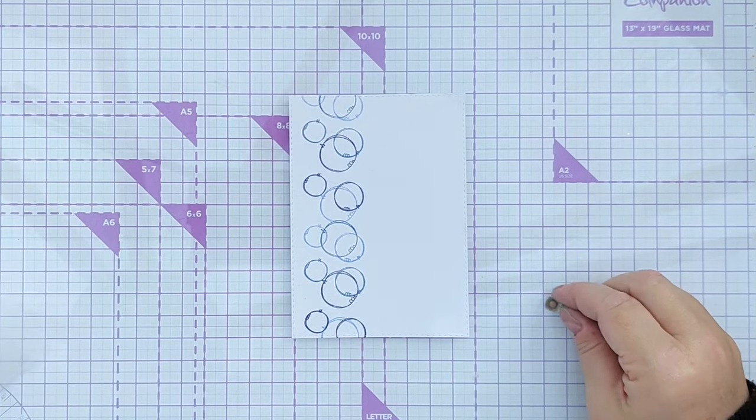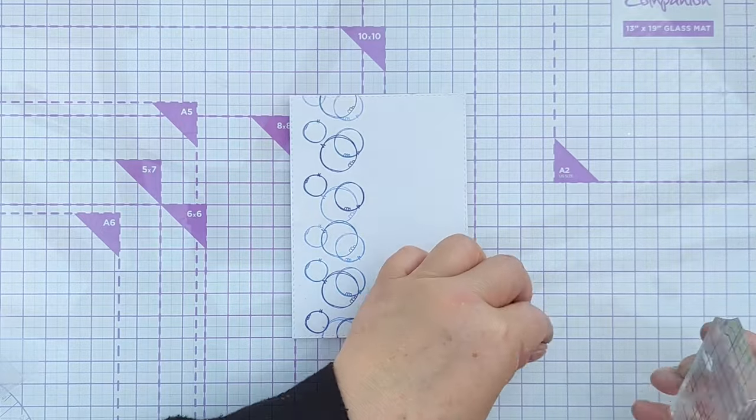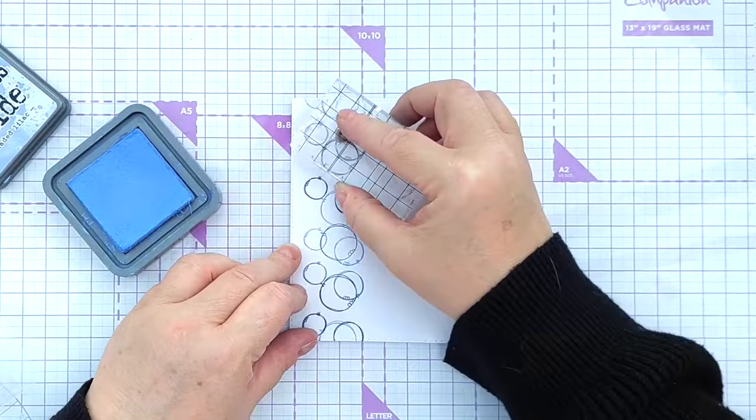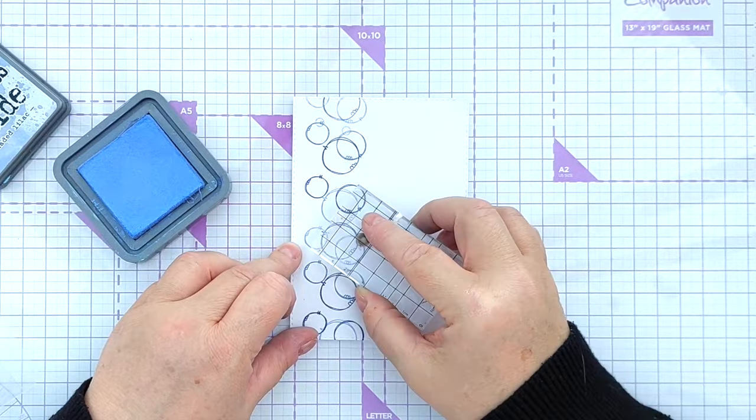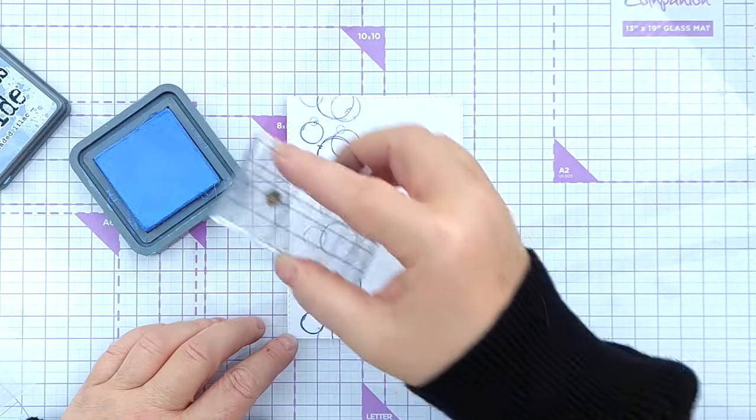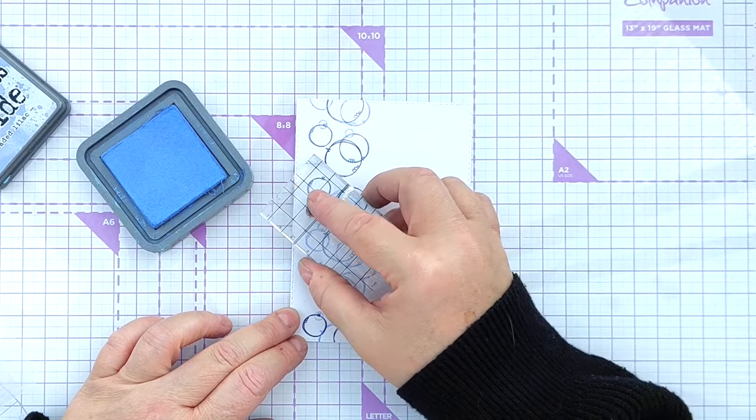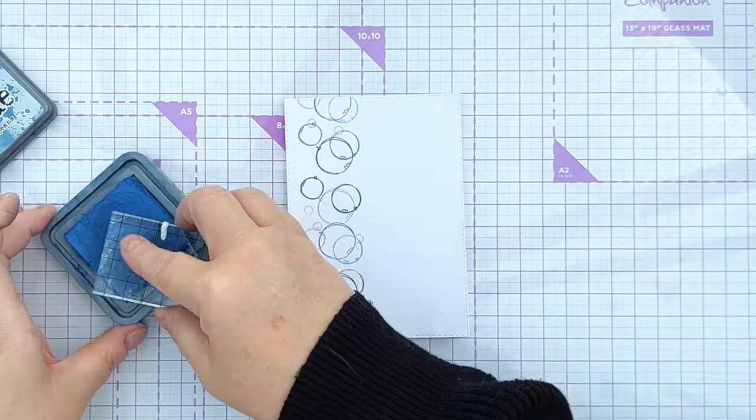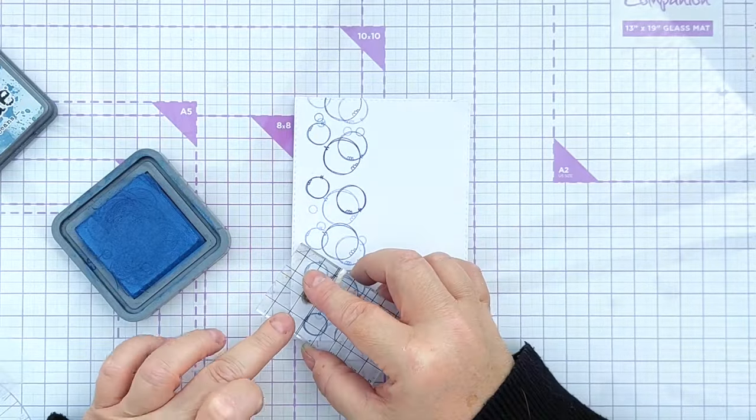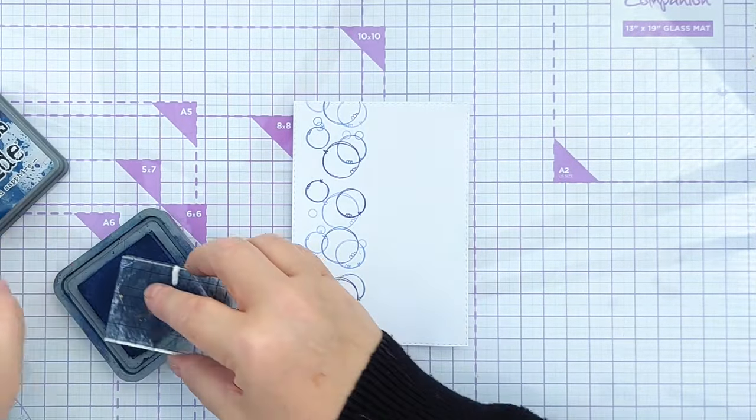What I've got here is a teeny tiny little open circle and I'm going to stamp that randomly, just to bring in some more variation and keeping similar colours together. So I'll do all the Shaded Lilacs here, like this, just to sort of fill in some gaps and now the Faded Jeans and now some Chipped Sapphire, just the last colour and now for the watery part.